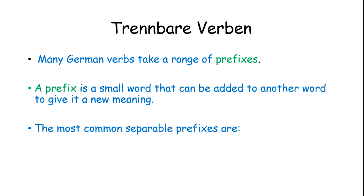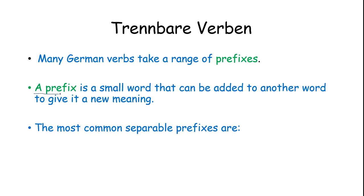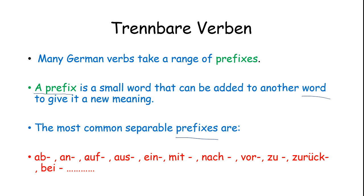Trennbare Verben. Many German verbs take a range of prefixes. What is a prefix? A prefix is a small word that can be added to another word, normally a verb, to give it a new meaning. When we add a prefix just before the verb, it will give us a new meaning. The most common prefixes are: ab, an, auf, aus, ein, mit, nach, vor, zu, zurück, bei. Normally these are the prefixes that are added just before the verb and give us a new meaning.